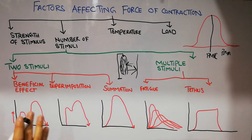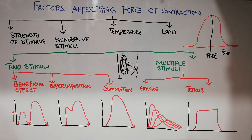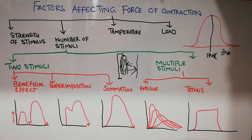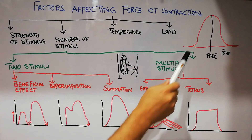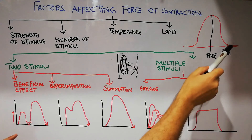We divide the number of stimuli into two main groups: either we apply two stimuli, or we apply multiple stimuli. If we apply two stimuli one after the other, then depending on the time difference between them, we can have three important effects. The first effect is known as the beneficial effect. Suppose a muscle has been activated, it has contracted, and it has just relaxed — as soon as it has relaxed...